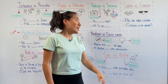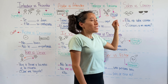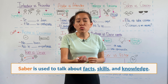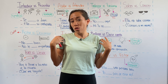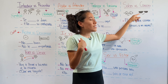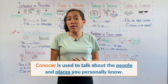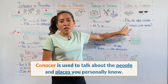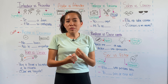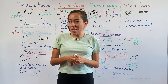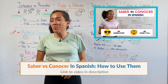Saber versus conocer. I call them Mr. Know-it-all and Mr. Connections. Mr. Know-it-all, saber, is used to talk about facts, skills, and knowledge — as in yo sé hablar español, I know how to speak Spanish. Mr. Connections, conocer, is used to talk about the people and places you know — for example, ¿conoces a mi mamá?, have you met my mom? Saber and conocer have some interesting nuances, so I'll leave a link in the description for more on this pair.